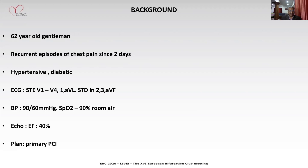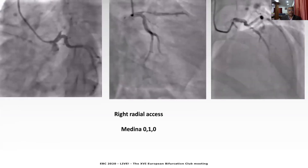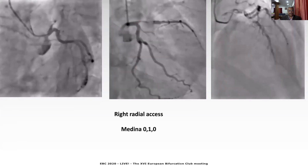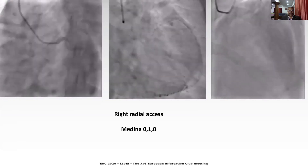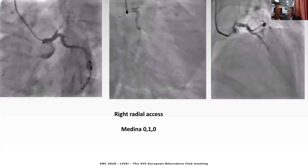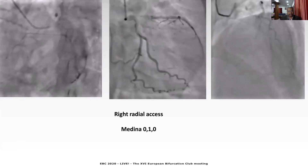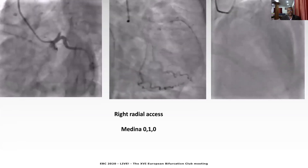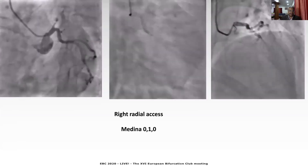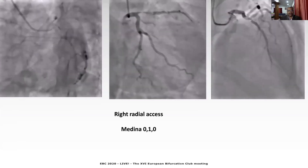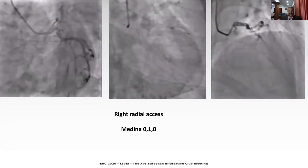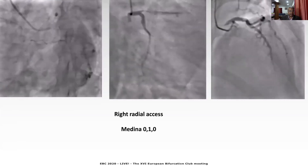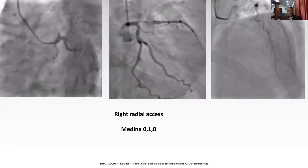He was loaded with antiplatelet and was transferred to the cath lab. A right radial access was obtained. A diagnostic angiogram showed LAD diffusely diseased from ostium and subtotally occluded with thrombus. Circumflex and RCA were angiographically normal. So we were dealing with a distal left main bifurcation lesion in a 0-1-0 Medina classification.